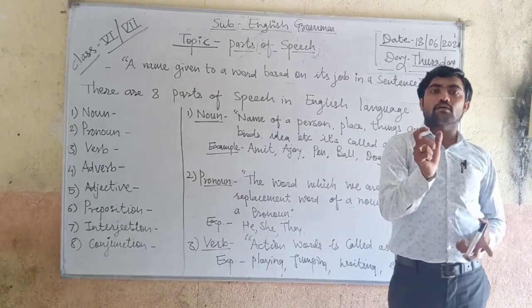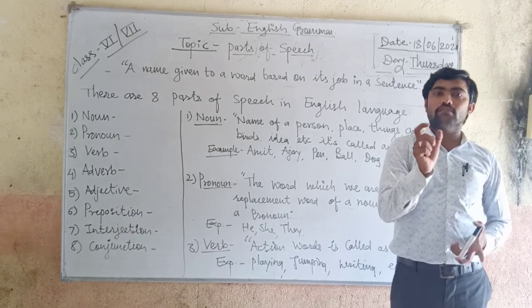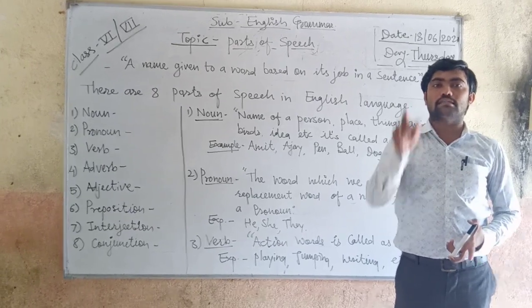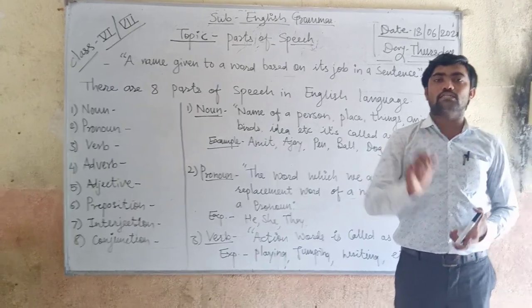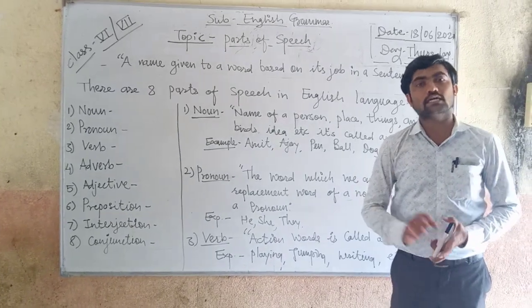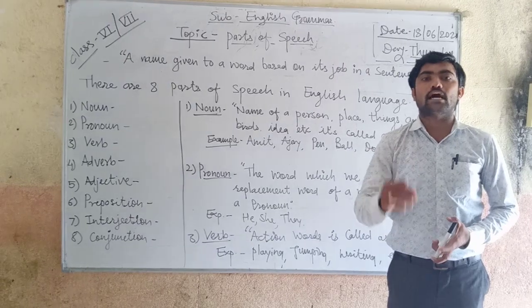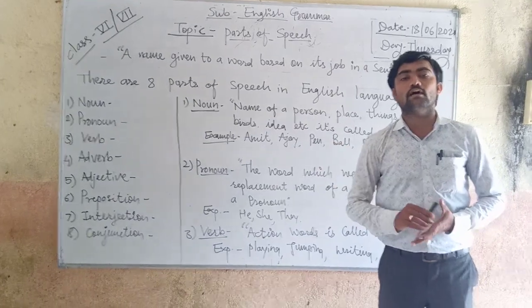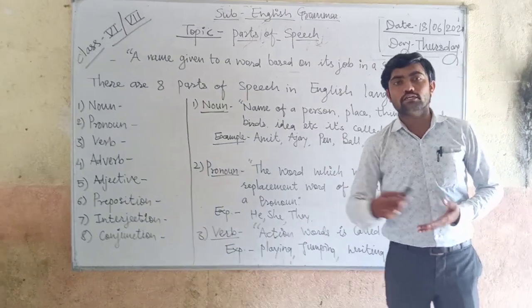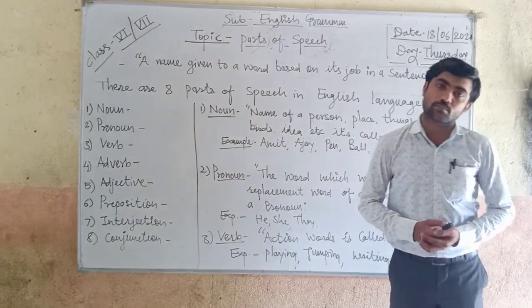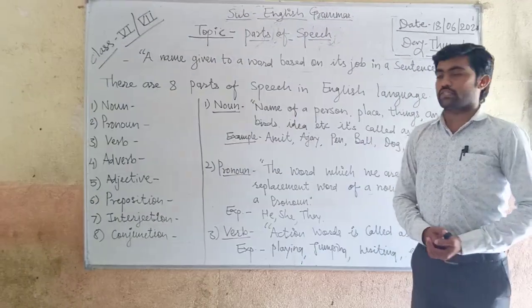So, instead of the name Ajain, when we use the word 'he,' that word 'he' is called a pronoun. A pronoun is the word we use in place of a name.